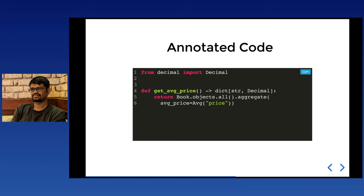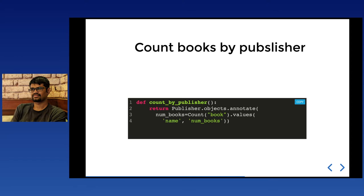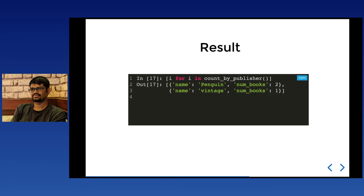Next is the `annotate` method. A function `count_by_publisher` uses `annotate(num_books=Count('books'))` to group publishers by name and return how many books each publisher has published, then calls `.values()`. The output is a list of dictionaries — since there are multiple publishers, each dictionary has two keys: `name` and `num_books`.